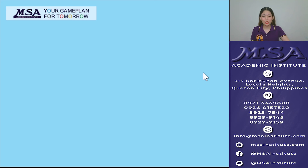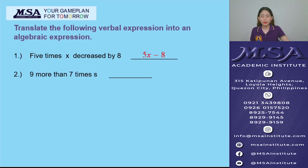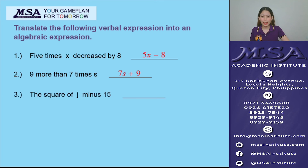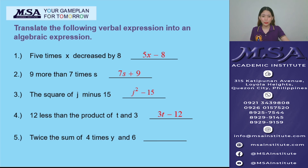Now it's your turn. Translate the following verbal expressions into algebraic expressions. Number 1: '5 times x decreased by 8' — answer: 5x minus 8. Number 2: '9 more than 7 times s' — answer: 7s plus 9. Number 3: 'The square of j minus 15' — answer: j² minus 15. Number 4: '12 less than the product of t and 3' — answer: 3t minus 12. Last: 'Twice the sum of 4 times y and 6' — answer: 2 times the quantity of (4y + 6).